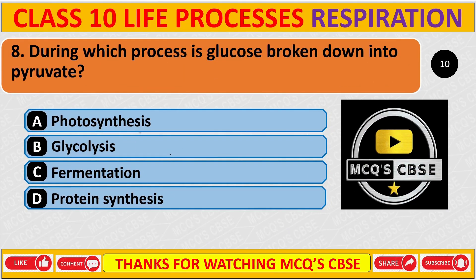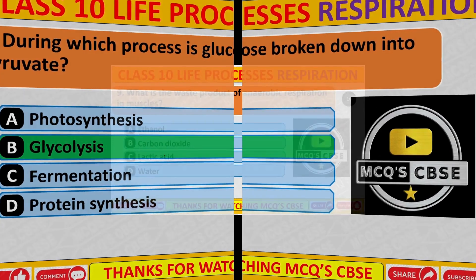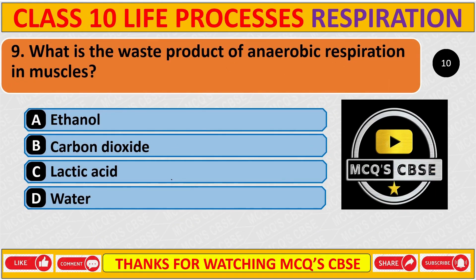Question 8: During which process is glucose broken down into pyruvate? Correct answer is B: Glycolysis. Question 9: What is the waste product of anaerobic respiration in muscles? Correct answer is C: Lactic acid.